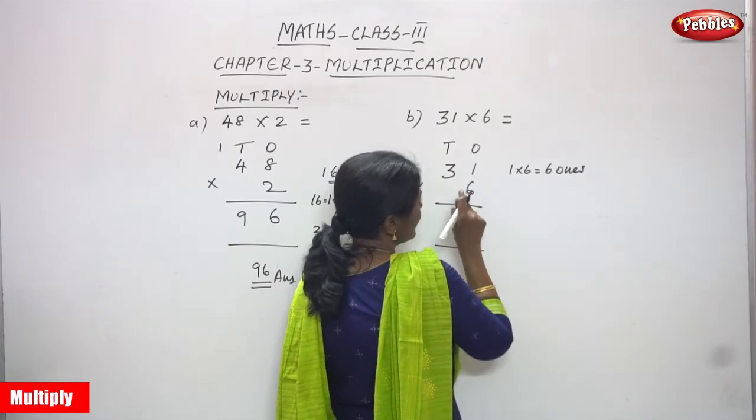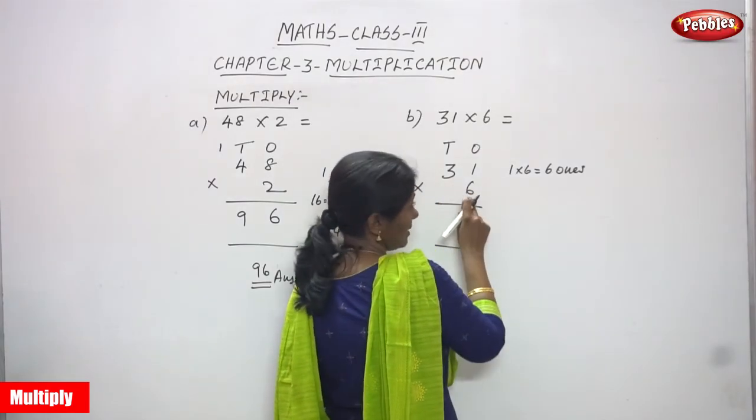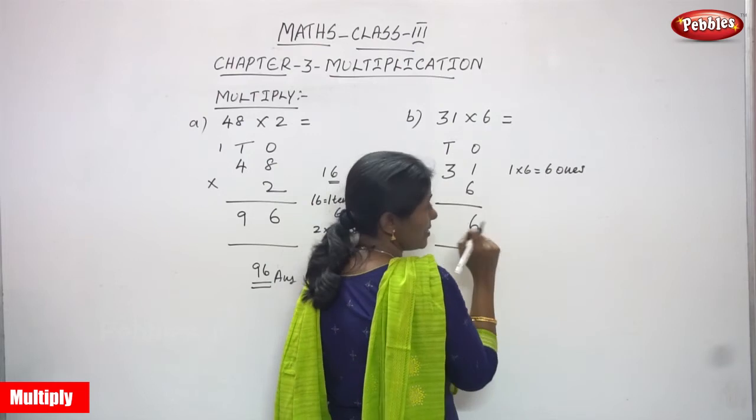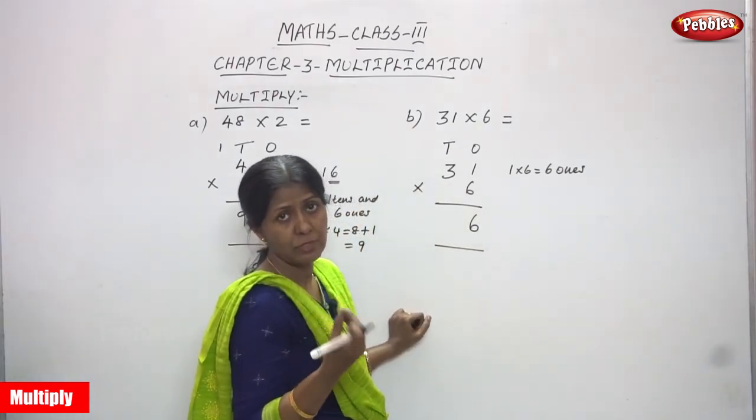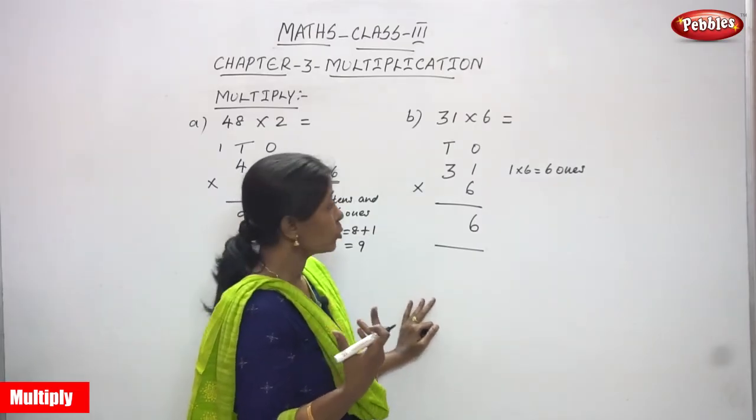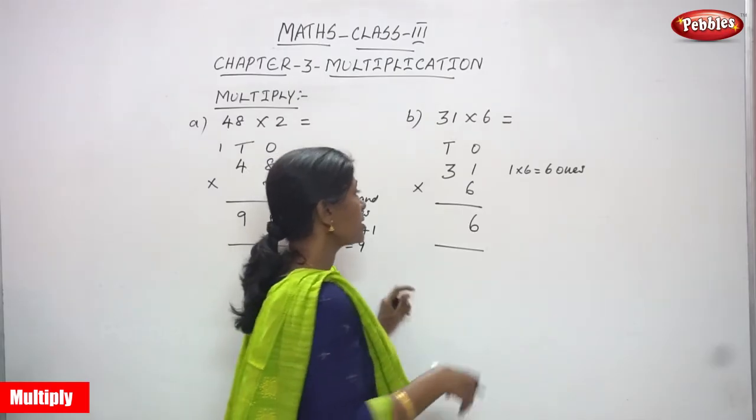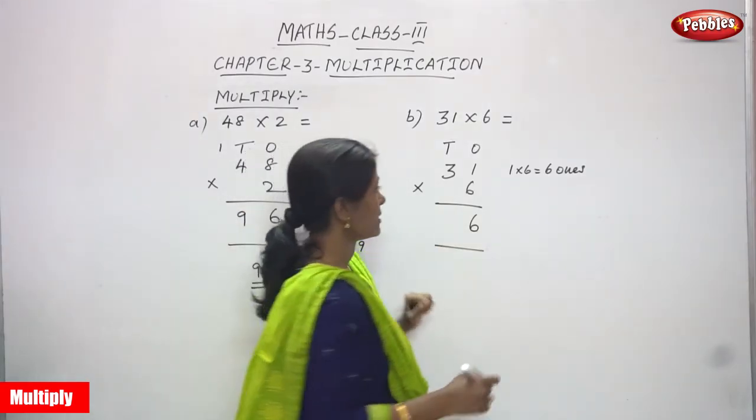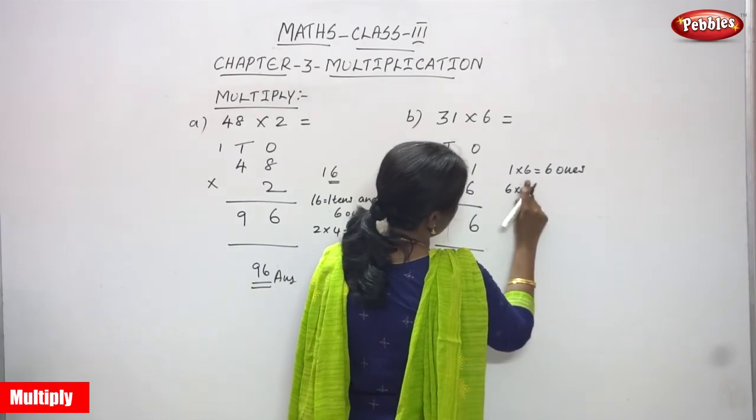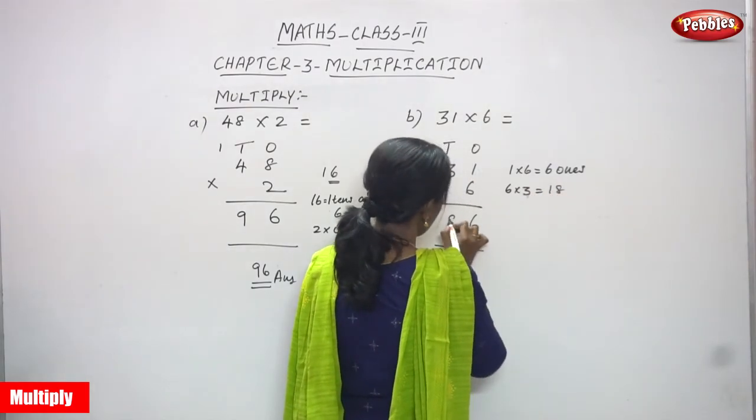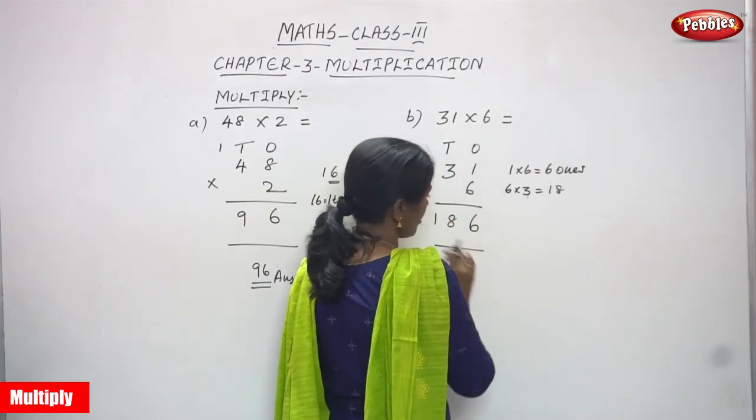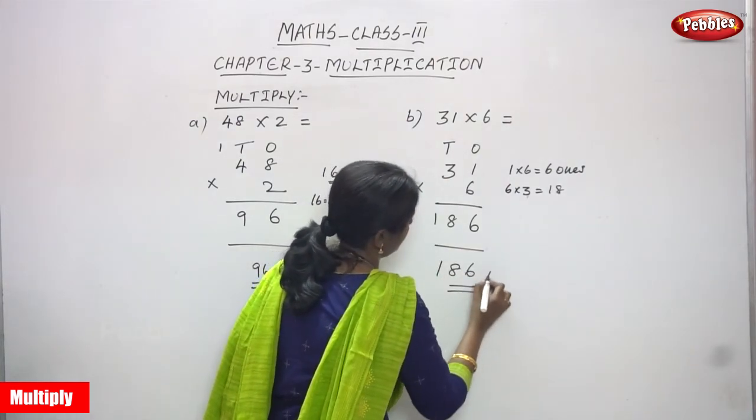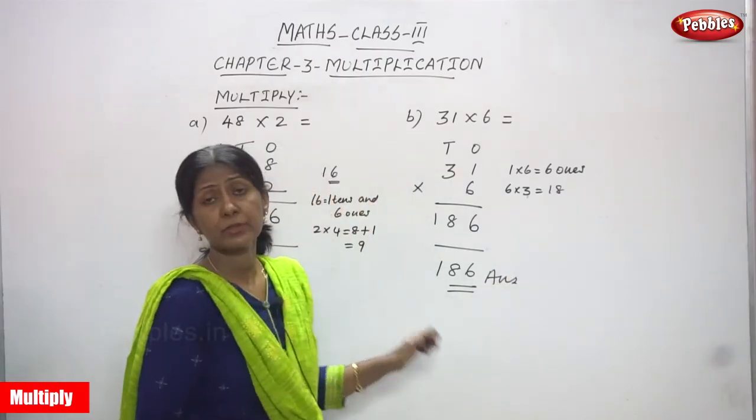Now I am going to multiply 6 into 3. You are going to say the 6th table, or else you can use the 3rd table also. Whichever is convenient for you and which table you are thorough in, you can use that table to do the multiplication without doing any mistakes. So I am going to use the 6 table. 6 ones are 6, 6 twos are 12, and 6 threes are 18. So 6 into 3 is 18. There is no carryover. I have just written the answer 186. This is the right answer for the question.